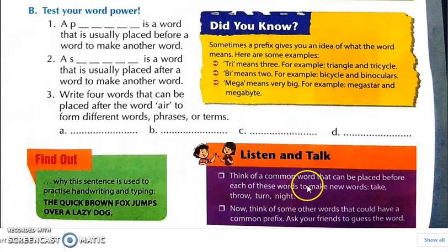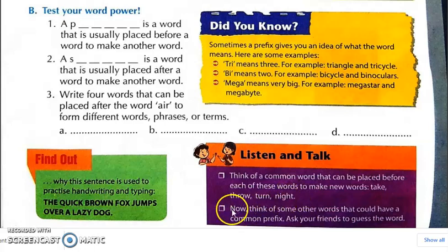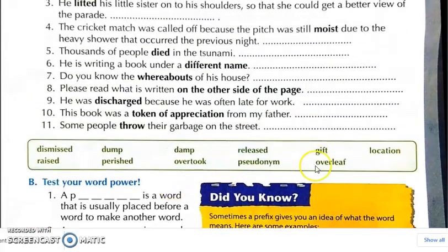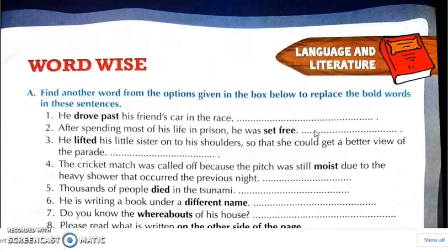Listen and talk. Think of a common word that can be placed before each of these words to make new words — take, through, turn, night. Now think of some other words that could have a common prefix and ask your friend to guess the word. So these prefix and suffix words — you have to write the new words they form and discuss with friends. The first answer is prefix, the second answer is suffix, and you have to write examples like force, line, stripes, and pocket. Write all these questions in your notebook and find the answers in the box. Thank you very much.